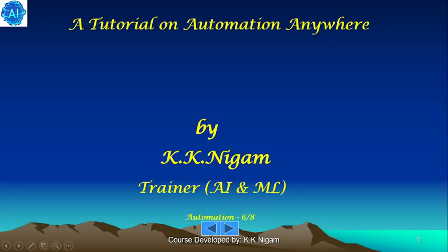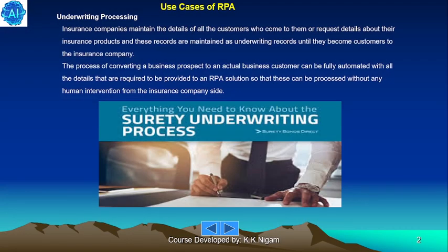Let's start with the sixth part of the automation engineer series. This is another use case: underwriting processing. Insurance companies maintain details of all customers who request information about insurance products. These records are maintained as underwriting records until they become customers. The process of converting a business prospect to an actual customer can be fully automated with all the required details provided to an RPA solution, processed without any human intervention.